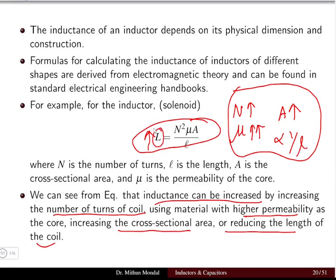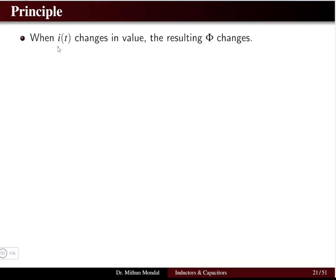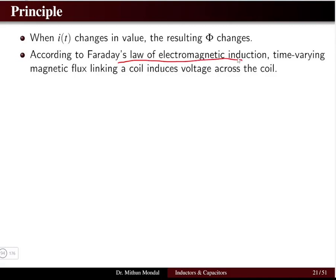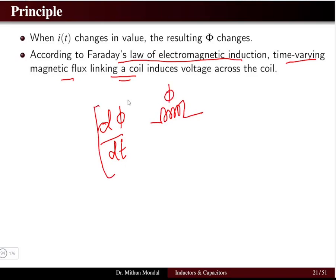When the shape of inductors changes, the formula also changes. The principle of the inductor: when there is a time rate of change of current, the resultant flux also changes. According to Faraday's law of electromagnetic induction, a time-varying magnetic flux dφ/dt linking with a coil will induce a voltage across the coil.